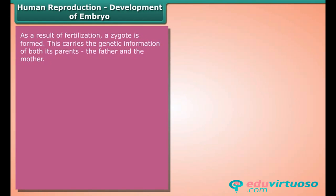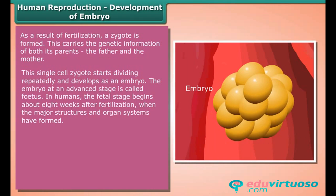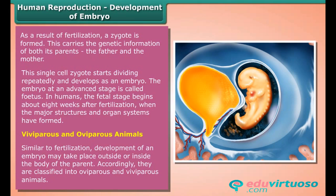As a result of fertilization, a zygote is formed which carries the genetic information of both its parents — the father and the mother. This single-cell zygote starts dividing repeatedly and develops as an embryo. The embryo at an advanced stage is called a fetus. In humans, the fetal stage begins about eight weeks after fertilization, when the major structures and organ systems have formed.